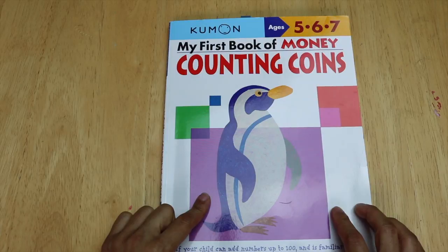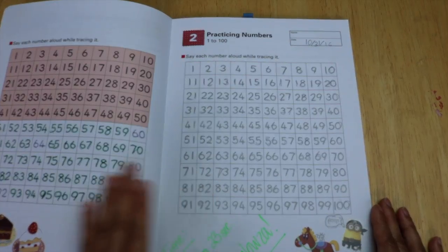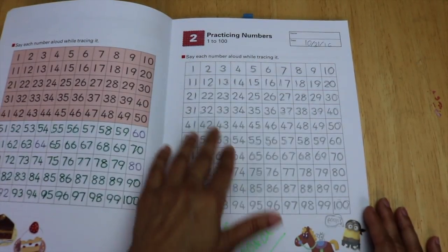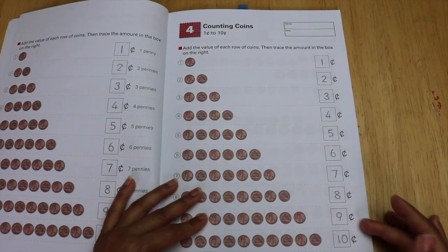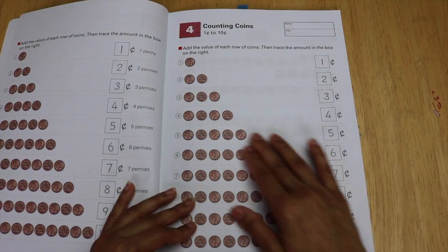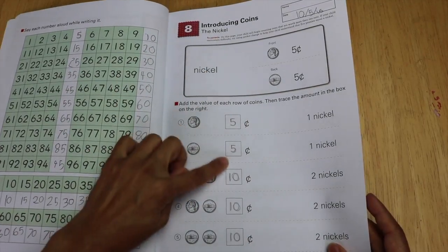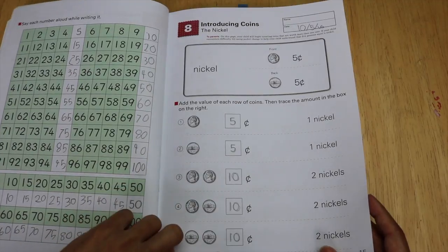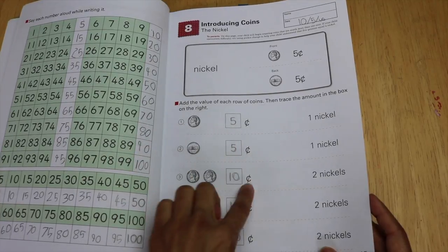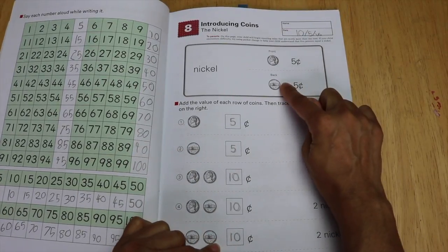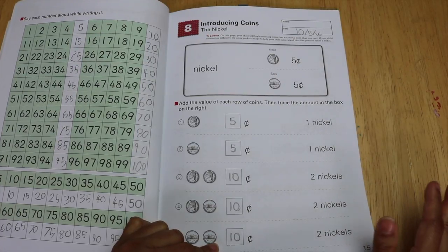I started him on the Kumon first book of money counting coins as well. We've been enjoying this book. I'm not a huge fan of Kumon notebooks for some things because they have so much writing and so much rote repetition, but I do like this book very much because it goes in a very orderly progression through pennies and number cents. It has a lot of pages where they'll have pre-written answers so they can understand exactly that a nickel is five cents, two nickels is 10 cents. They show the backs of the coins, which I like, and they actually have the photographs of the coins. So it's a perfect representation of the coins, which I like.